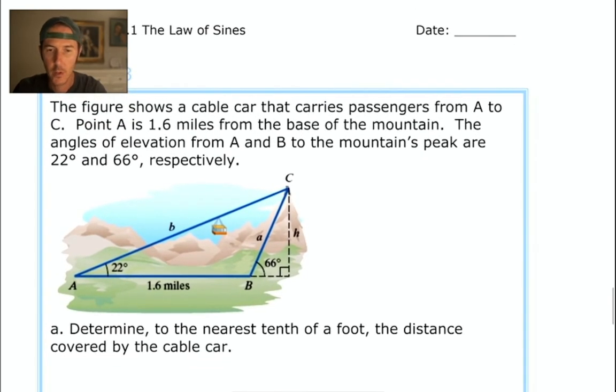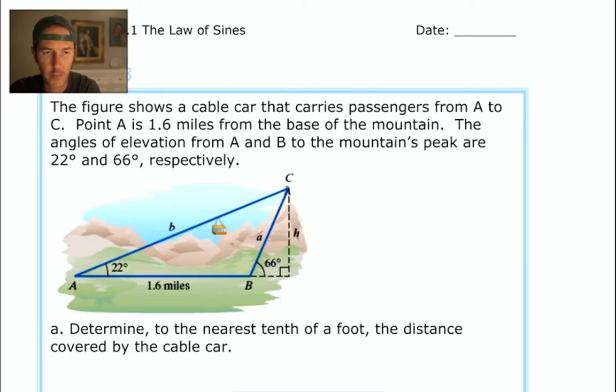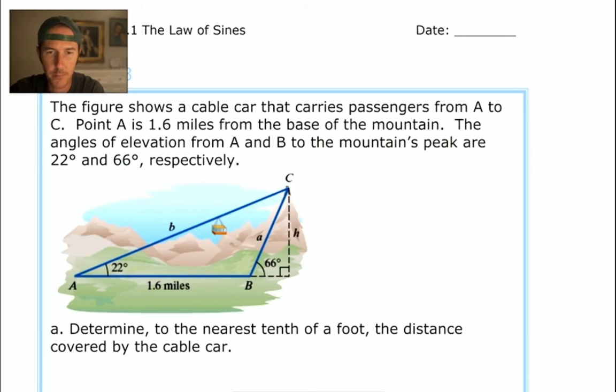Let's see what's going on in this word problem. This figure shows a cable car carrying passengers from A to C. Point A is 1.6 miles away from the base of the mountain. The iPad is on the blank. I think that's round three. We're really making it work this time. Here we go. Hopefully it hangs in there.